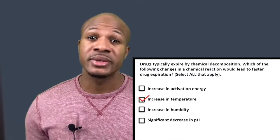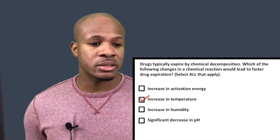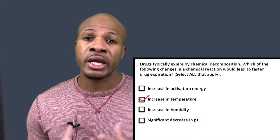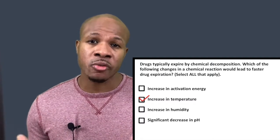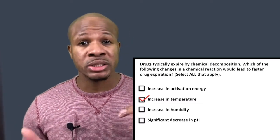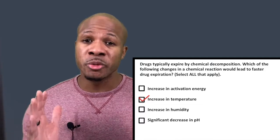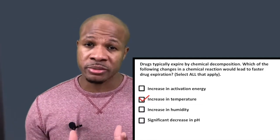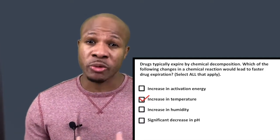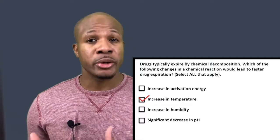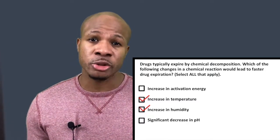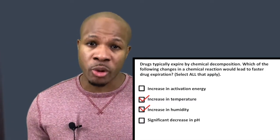C says: increase in humidity. Humidity is basically an increase in the pressure of water. Whenever you have an increase in pressure, pressure causes molecules to move closer to each other, and the closer they are together, the more likely they are to react with one another. So an increase in pressure or humidity would definitely cause chemical reactions to occur faster as well.